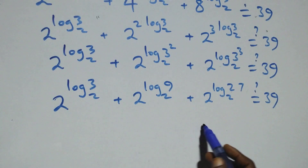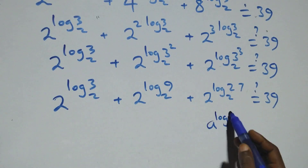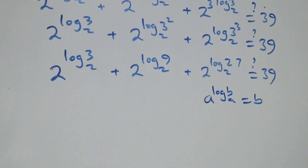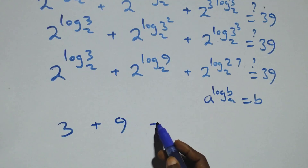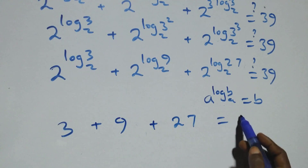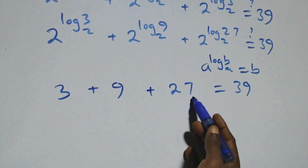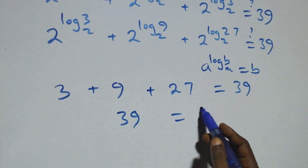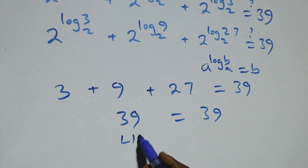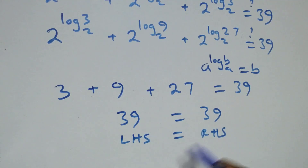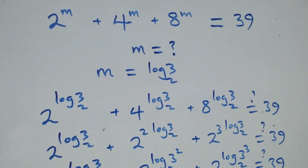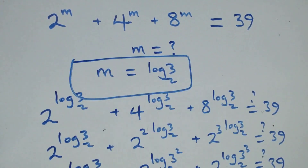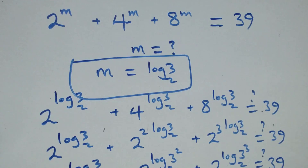We apply the log identity: when we have a raised to power log b to base a, this equals b. So we get 3 plus 9 plus 27, which equals 39 on this side. And 3 plus 9 plus 27 equals 39, so left hand side equals right hand side. Therefore we conclude that m equals log 3 base 2 satisfies this given problem. Thank you for watching — don't forget to subscribe for more videos, turn on the notification button, share this video, give a thumbs up, and put your comments. See you next time, bye for now.